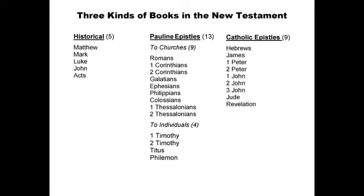Just like in the Hebrew Bible, where there were three different kinds of books, we can also break down the New Testament into three different kinds of books: historical books, the Pauline epistles — those are the letters written by Paul — and then the Catholic epistles, which are universal letters written not to a specific person or church, but to whoever would receive them as they were circulated from church to church.